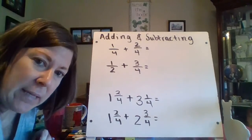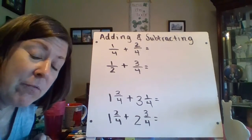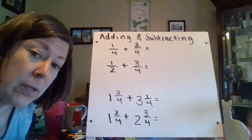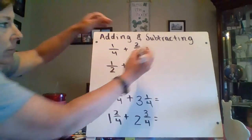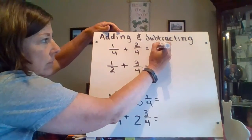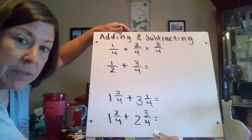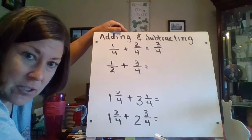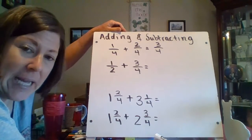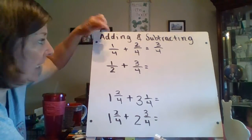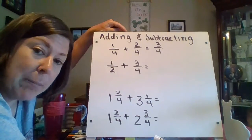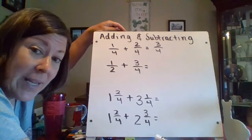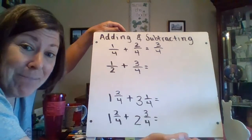Next, adding and subtracting. The first example is already apples to apples. 1 fourth plus 2 fourths equals 3 fourths. I never add denominators — that would be like saying 1 apple plus 2 apples gives me 3 oranges. Nope, I still have 3 apples.